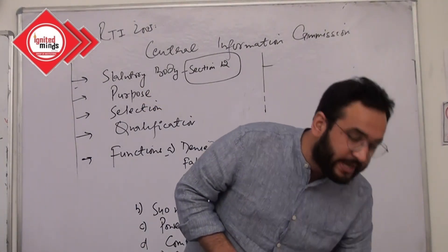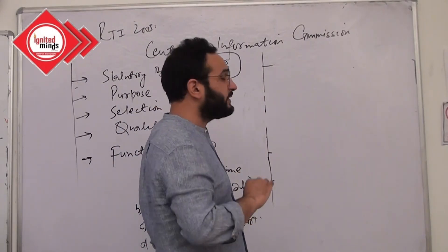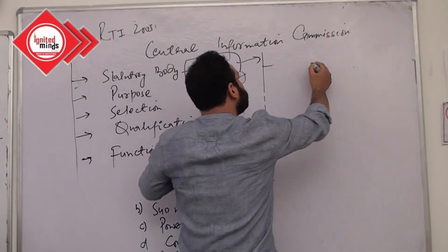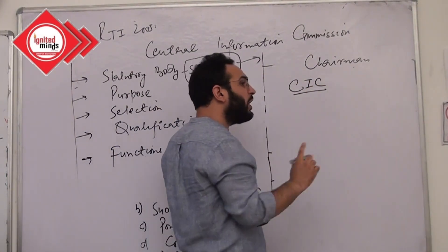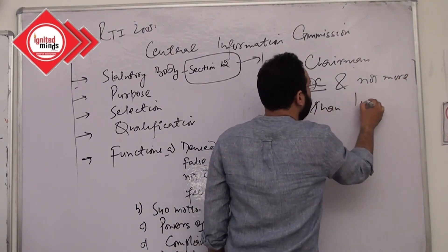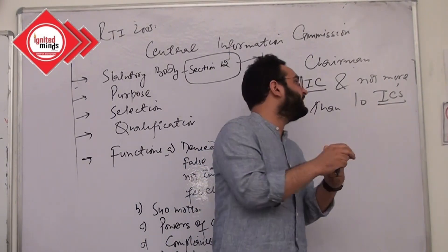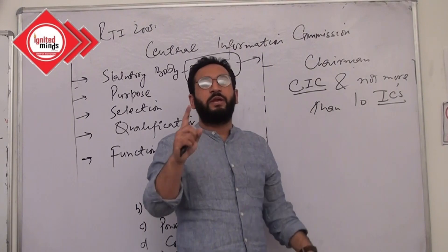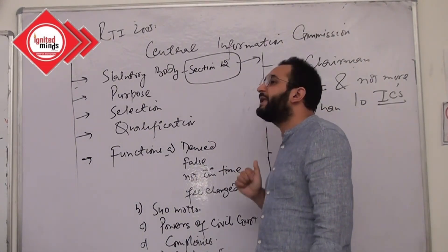We will not discuss tenure and service conditions here, because RTI 2019 made changes to those — we shall discuss those when we discuss the controversy. Section 12 says that the Central Information Commission shall have one chairman — called the Chief Information Commissioner of the CIC — and there shall be not more than 10 Information Commissioners. So it will be a team of 11 members: one Chief Information Commissioner and up to 10 Information Commissioners of the CIC.